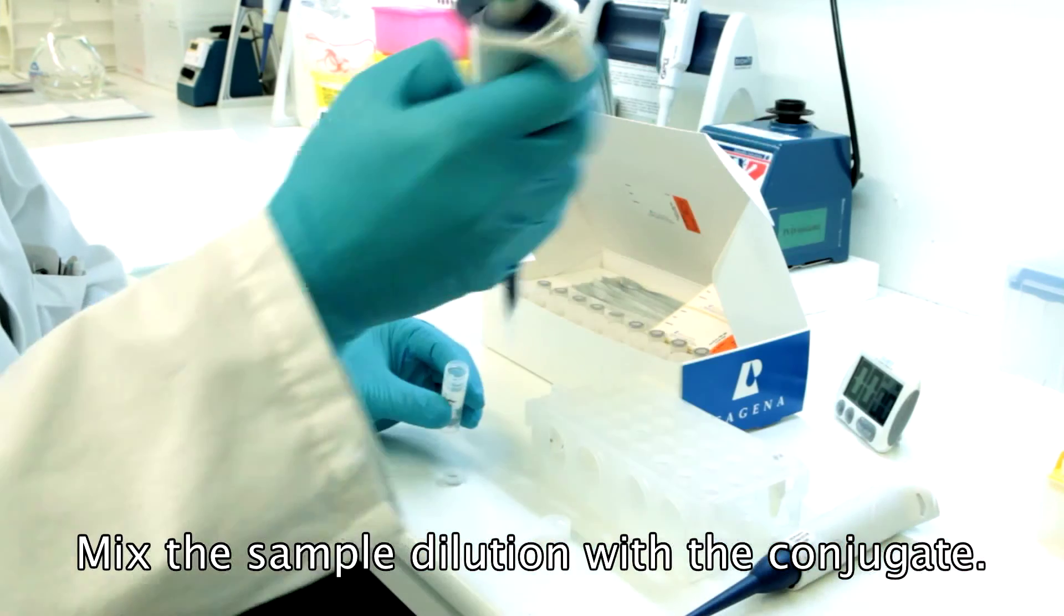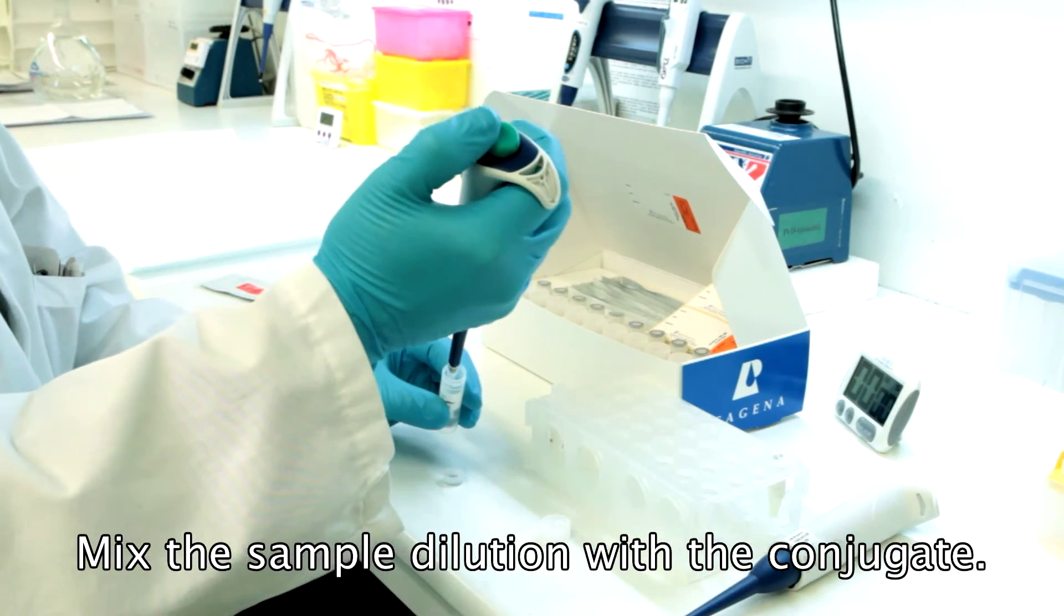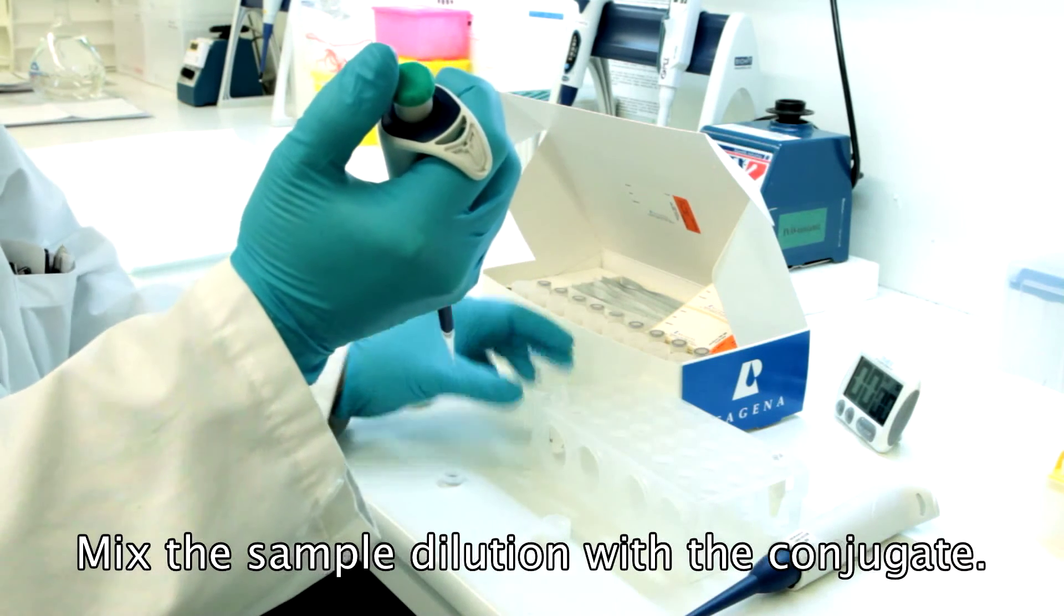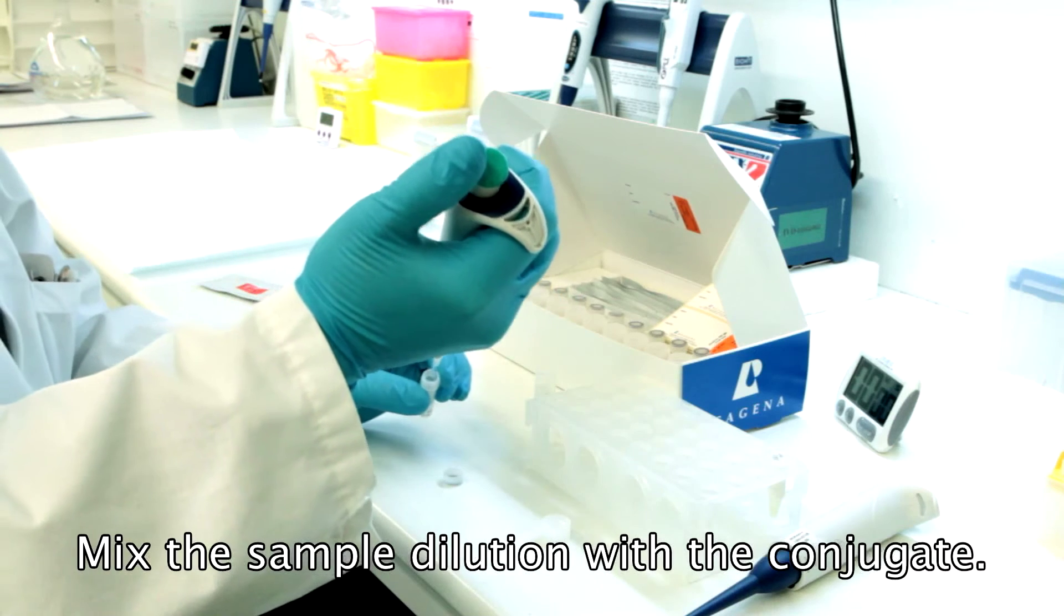Transfer 100 µl of diluted sample into the conjugate vial. Mix carefully by pipetting backwards and forwards until the conjugate is dissolved completely.